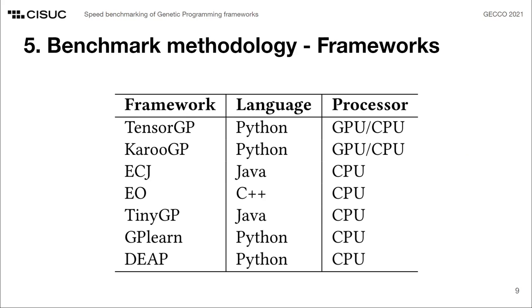Moving on to the methodology section, I will start by presenting the genetic programming systems considered in this study. In total, seven frameworks were compared. These frameworks can be divided into two categories: the ones that vectorize the evaluation domain — those are TensorGP and KaroGP — and the remaining ones that perform iterative evaluation. DEEP, Evolving Objects, and ECG are arguably the most popular evolutionary computation frameworks employed in most of the research made in the field of genetic programming. Additionally, DEEP along with GP-Learn represent alternatives that allow for the quick prototyping of controlled evolutionary environments with little implementation effort. We also chose to include TinyGP, a more minimalistic but classic genetic programming implementation that can be used out-of-the-box.